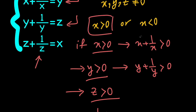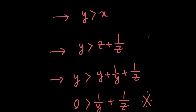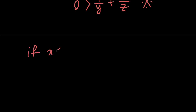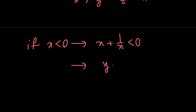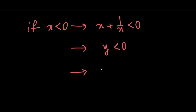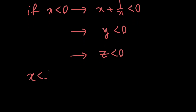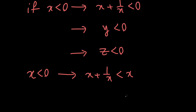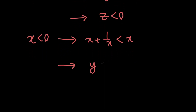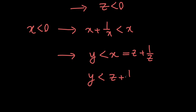Now let's talk about the scenario where x is negative. If x is negative, that means x plus 1 over x is going to be negative. Remember that x plus 1 over x is y, so y is going to be negative. And using the same argument, z is going to be negative as well. Notice that whenever x is negative, x plus 1 over x is less than x. So y is going to be less than x. And since x is z plus 1 over z, y is less than z plus 1 over z.